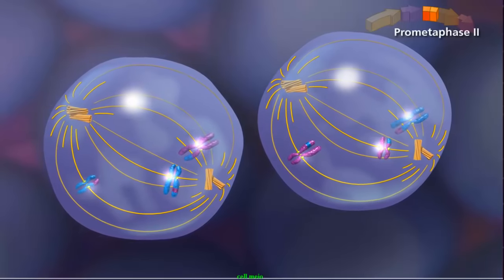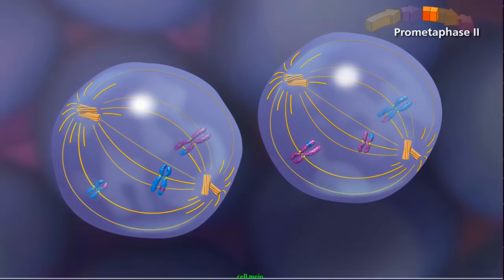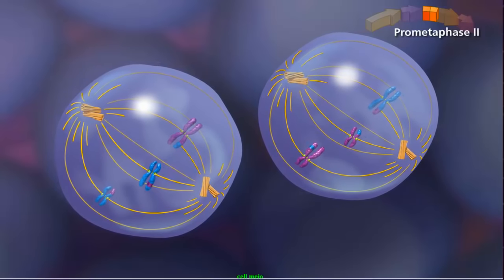In prometaphase II, the sister chromatids attach to the spindle by kinetochore microtubules, with sister chromatids attached to opposite poles.